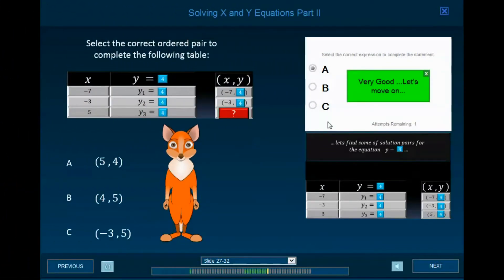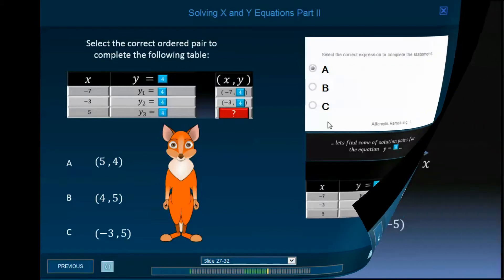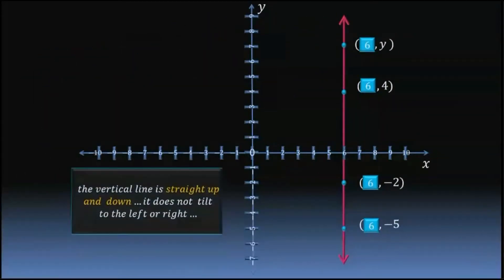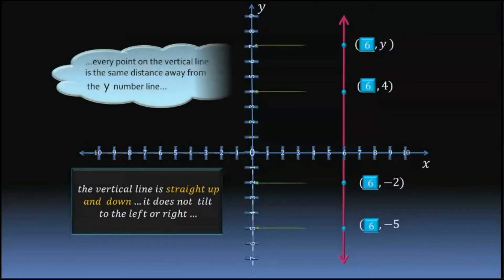The correct ordered pair to complete the following table is answer choice a, the ordered pair 5, 4. You see that the equation creates a graph that is a vertical line. The vertical line is straight up and down. It does not tilt to the left or right. And every point on the vertical line is the same distance away from the y number line.